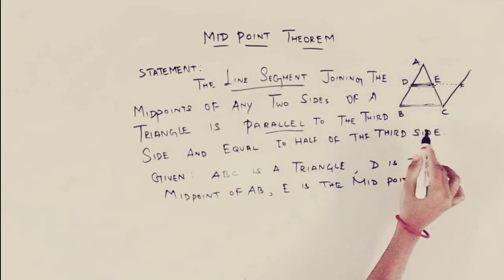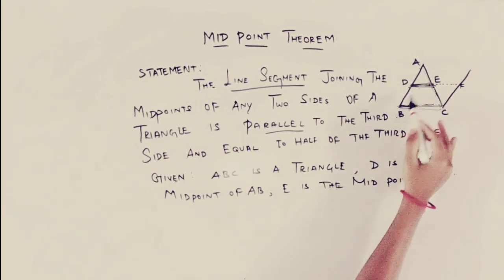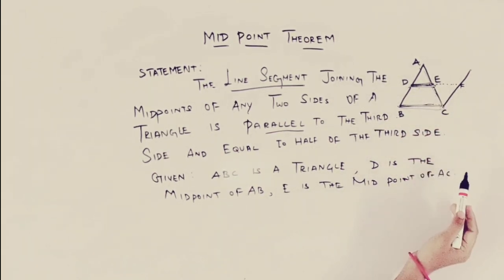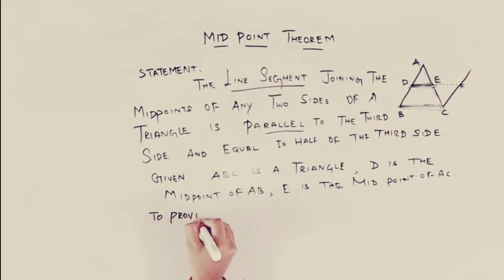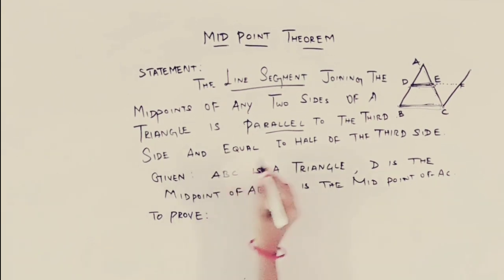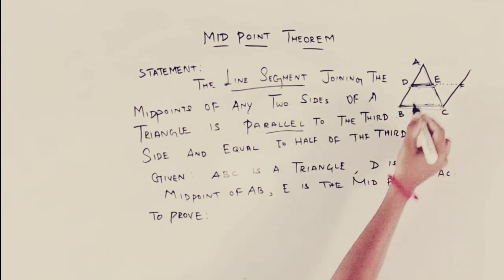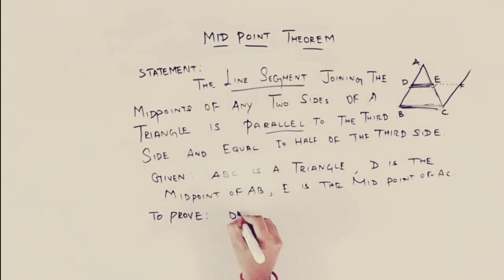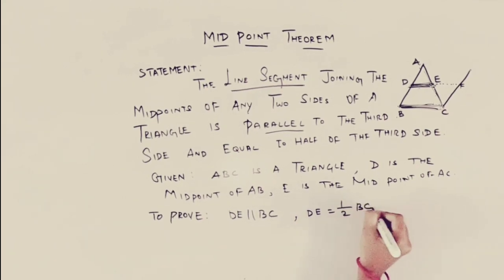In triangle ABC, D is the midpoint of AB and E is the midpoint of AC. To prove: DE is parallel to BC, and DE equals half of BC.